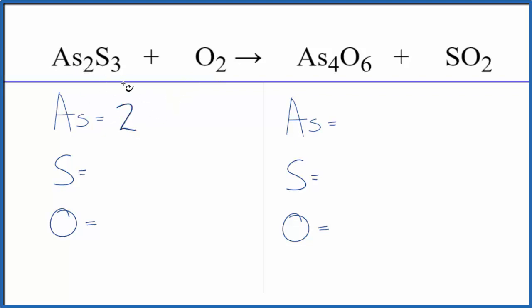We have two arsenic atoms, three sulfurs, and two oxygens. Product side, we have four of these arsenic, we have one sulfur, and then we have six oxygen, plus, don't forget these two oxygen out here, a total of eight oxygen atoms.